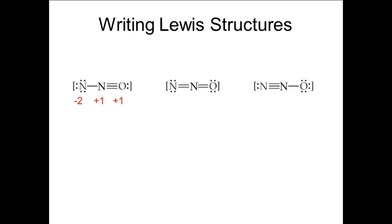For the center structure, the left nitrogen is assigned six electrons, the center nitrogen four, and the oxygen six, for formal charges of minus one, plus one, and zero. For the right structure, the left nitrogen is assigned five electrons, the center nitrogen four, and the oxygen seven, for formal charges of zero, plus one, and minus one.